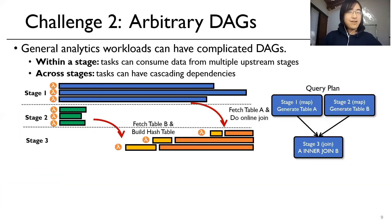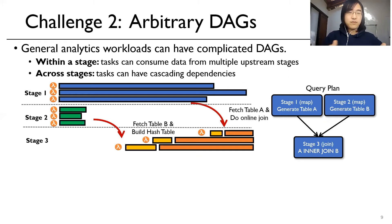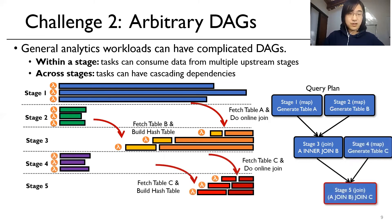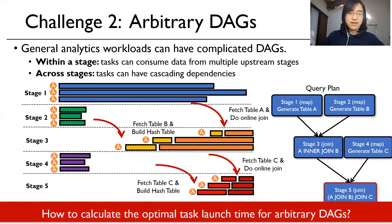Second, general analytics workloads can have complicated DAGs. Within a stage, tasks can consume data from multiple upstream stages — for example, stage three consuming data from both stage one and stage two. And across stages, tasks can have cascading dependencies — stage five depending on stage three and stage four, which in turn depends on stage one and stage two. The second challenge is therefore how to calculate the optimal task launch time for arbitrary DAGs.